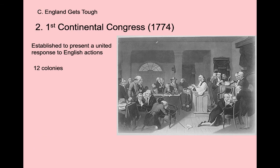By 1774, things are heating up quickly. The more England persecutes the colonies, the more it forces them together. The First Continental Congress meets in 1774—12 colonies attend, compared to just 9 at the Stamp Act Congress. Their goal is to figure out how to peacefully get England to stop. Not everyone in America is a patriot wanting violent opposition; most people at this point aren't even talking about independence or revolution—they just want England to go back to salutary neglect.